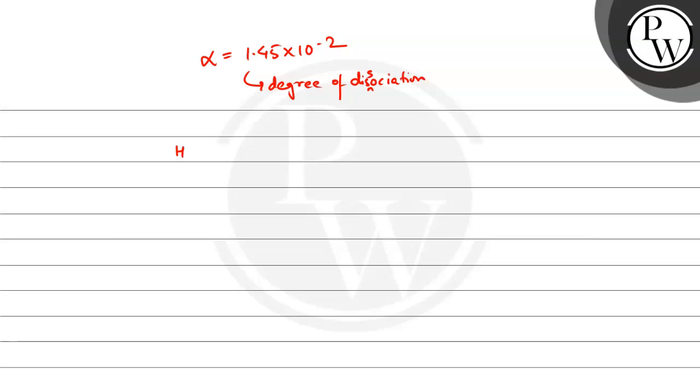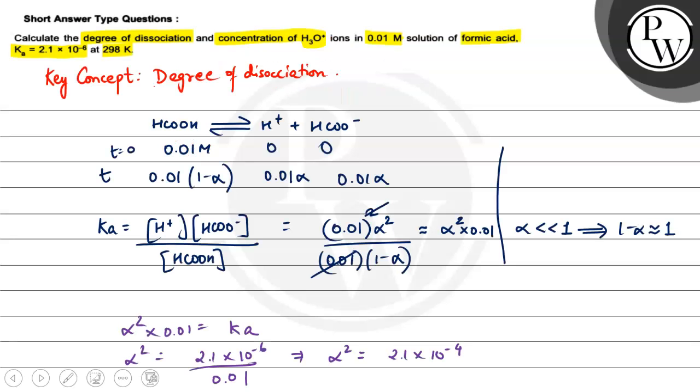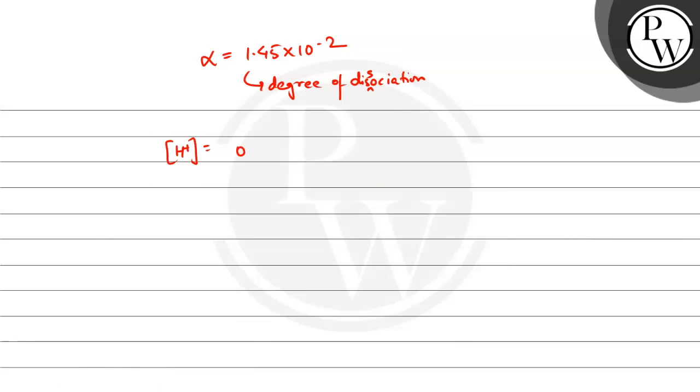Now we know H plus concentration, which way? H plus concentration is 0.01, is going to be 0.01 into 1.45 into 10 to the power minus 2.